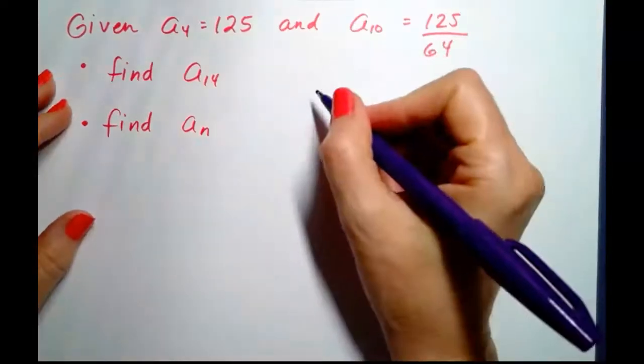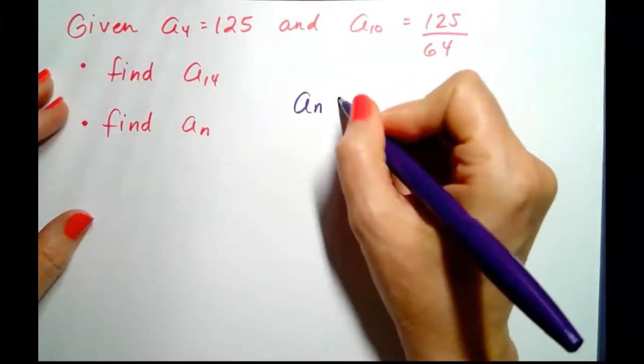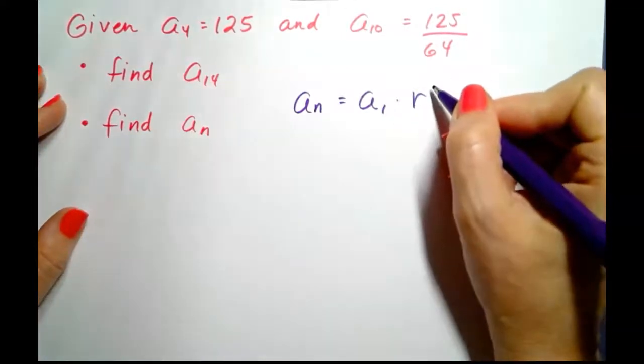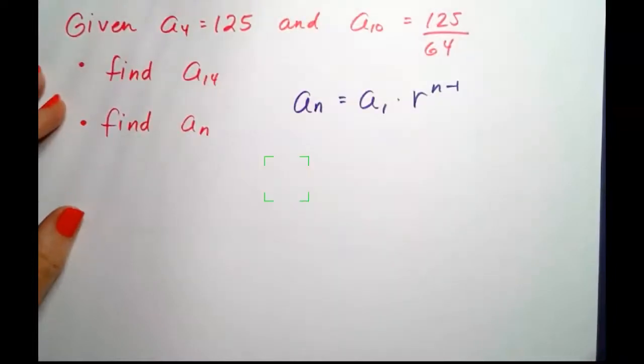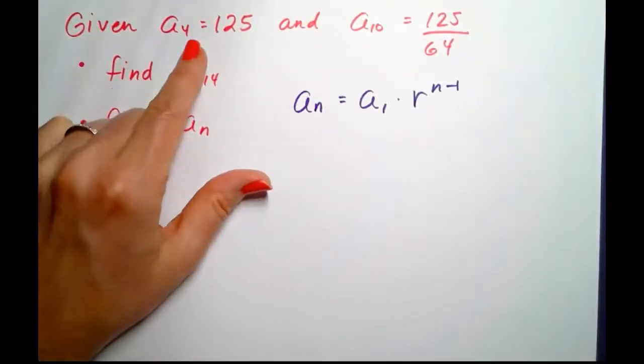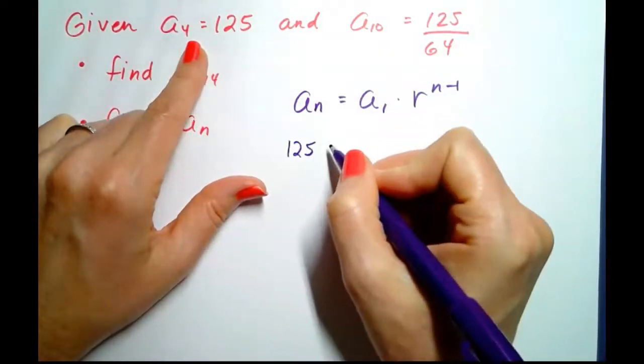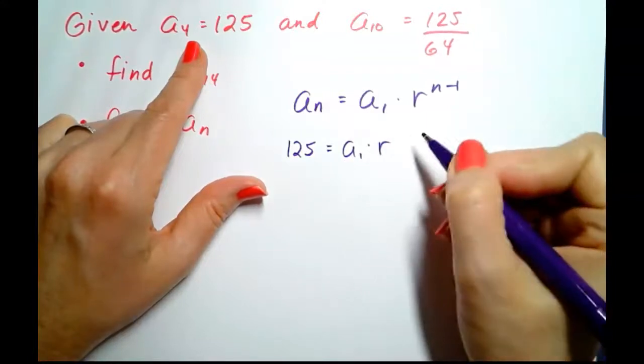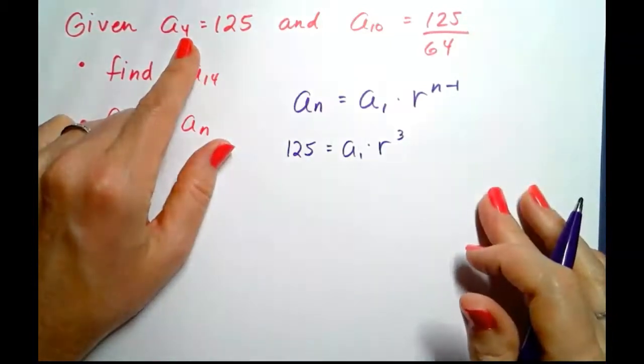The first thing that we know is that a sub n equals a sub 1 times r to the n minus 1. This is just the general form of a geometric series. So if a sub 4 is 125, then 125 equals a sub 1 times r to the 4 minus 1, which is 3. There's the first equation.